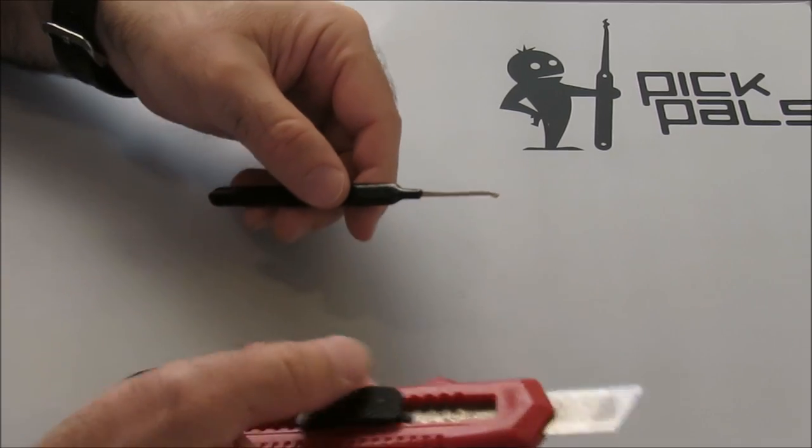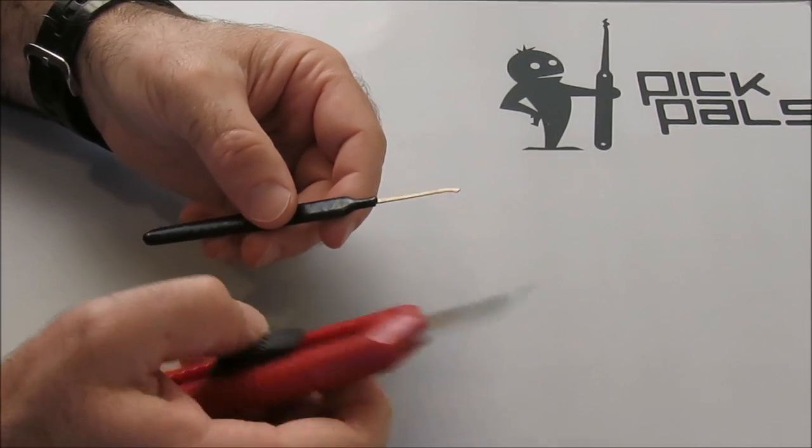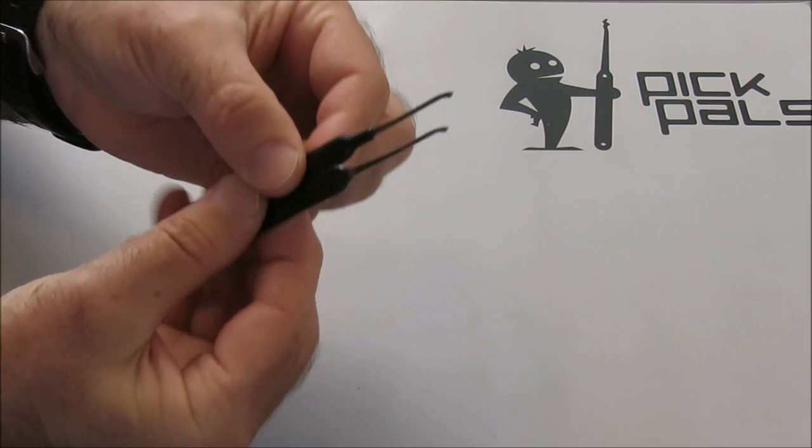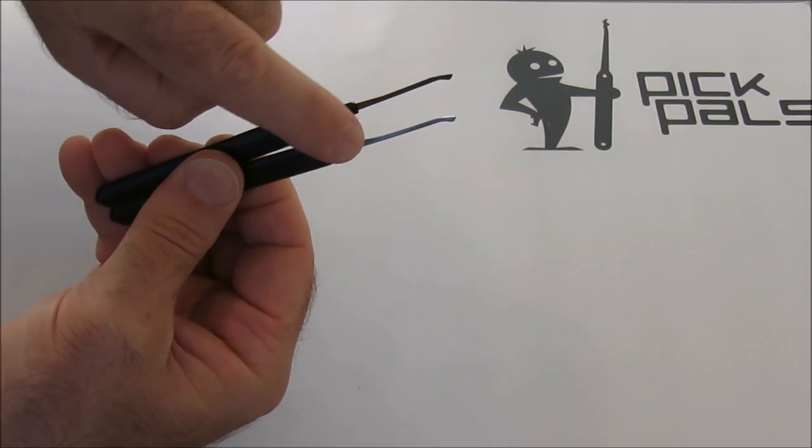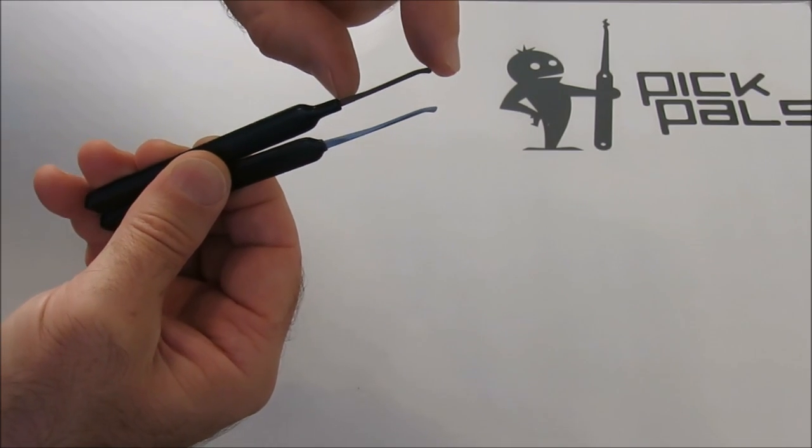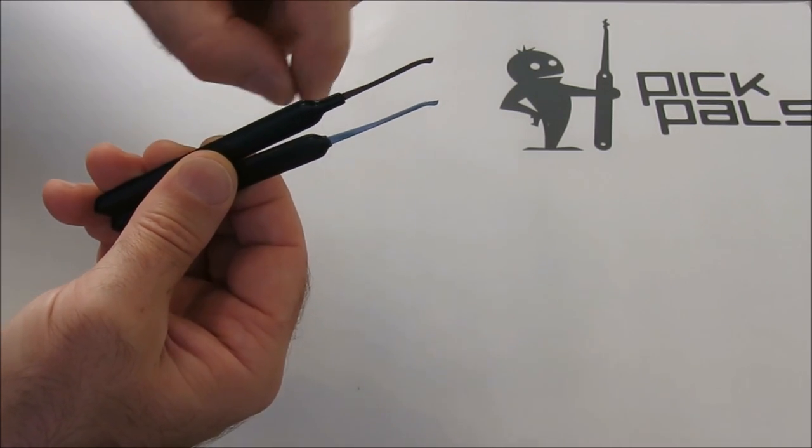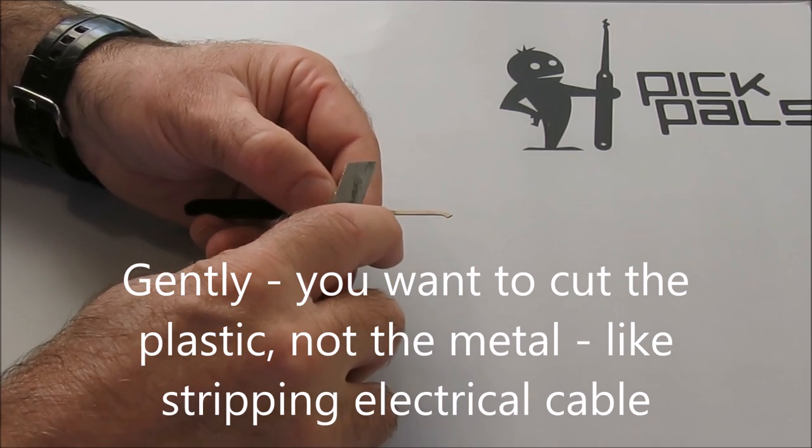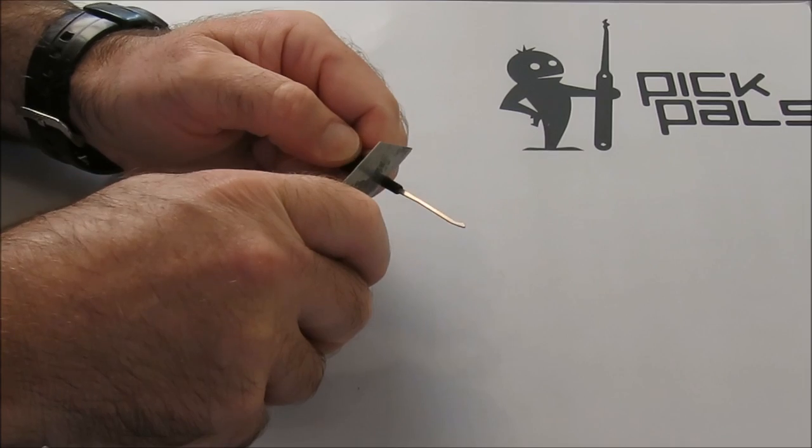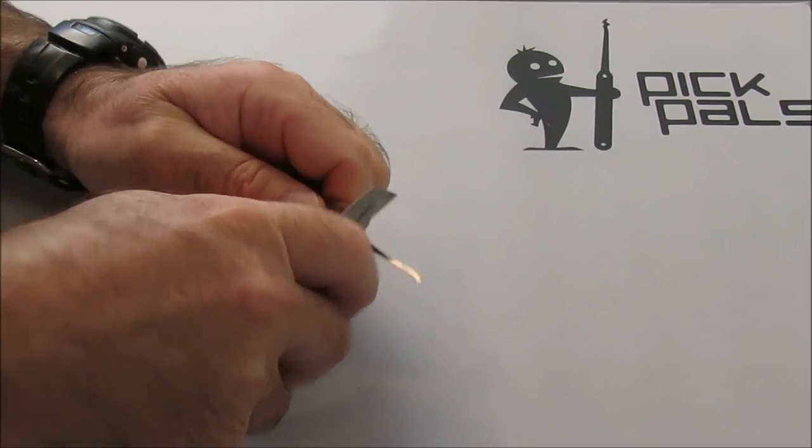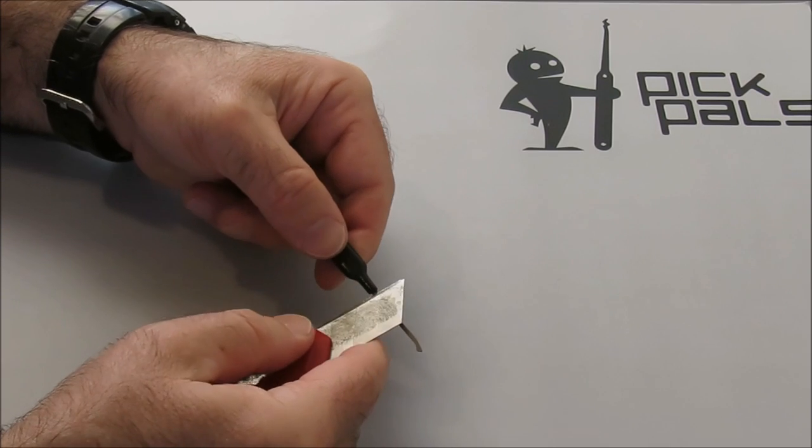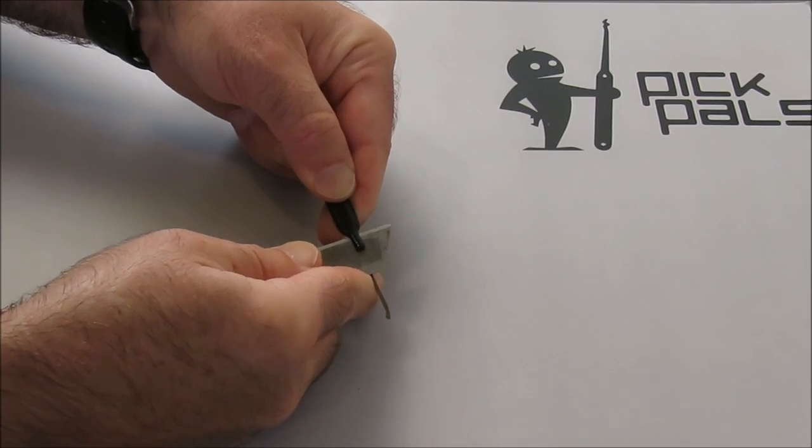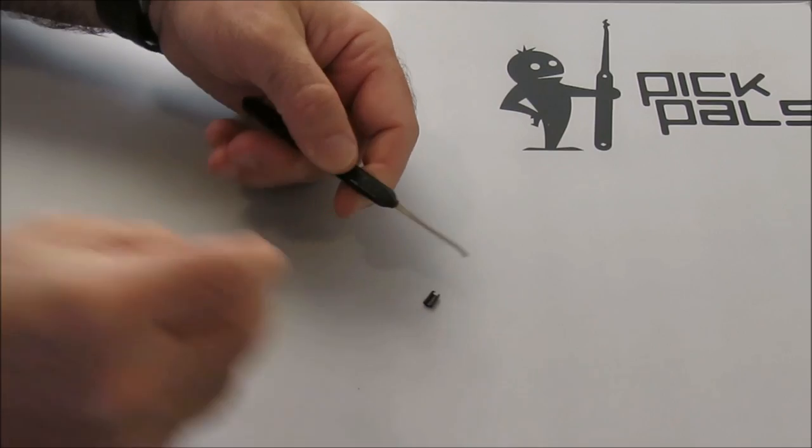Now we're getting down to the pointy end. Let's actually do some work on this thing. The first thing we've got to do is cut this little bit of plastic off from the handle. You can see that the finished pick has got a little bit of a longer shaft here so we can get it into a decent size lock. Let's get in there with a Stanley knife. We're just going to cut around all four sides of the shaft, then cut down towards the cut we just made. And that's part one done.